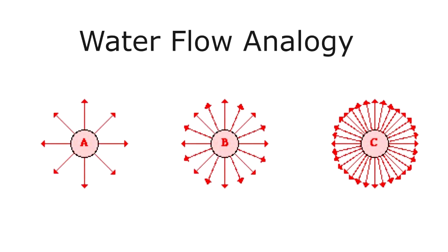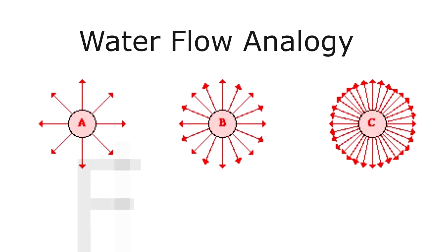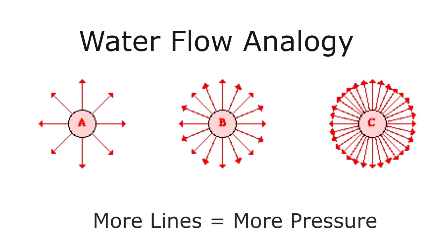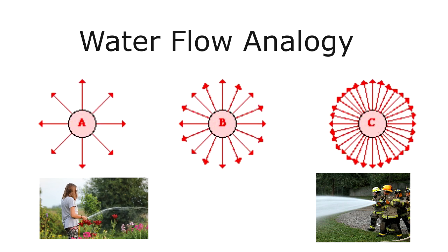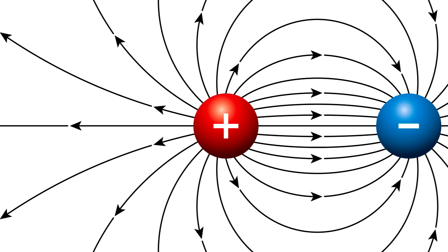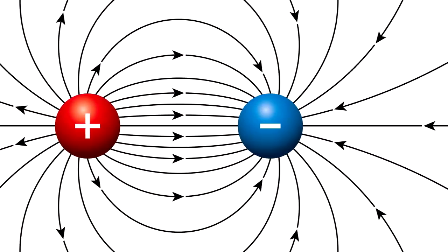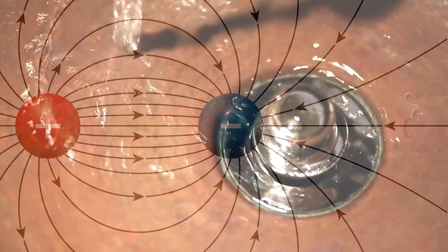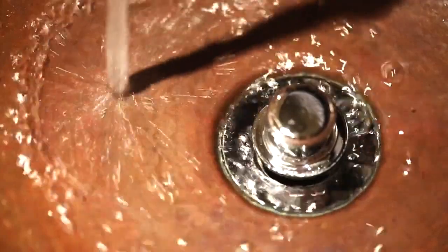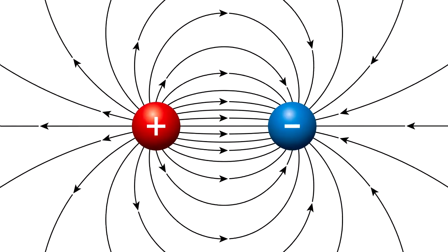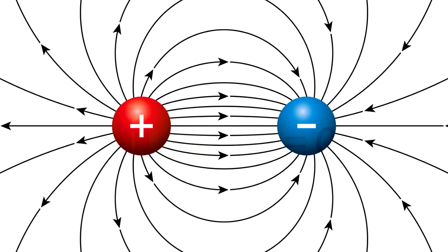Remember these two points from our water flow analogy: flux equals flow. More lines is like greater water pressure - think of a strong fire hose versus a weaker garden hose. Lines pointing out are like a faucet or source, and lines pointing in are like a sink or drain. Only instead of water pressure, it is electric force pressure.